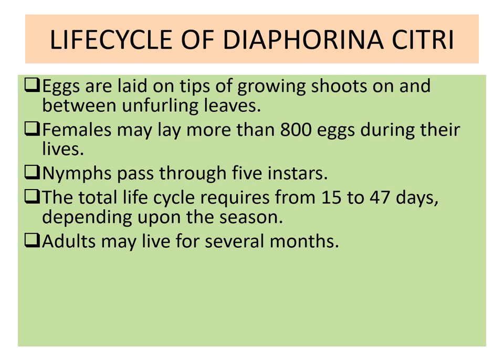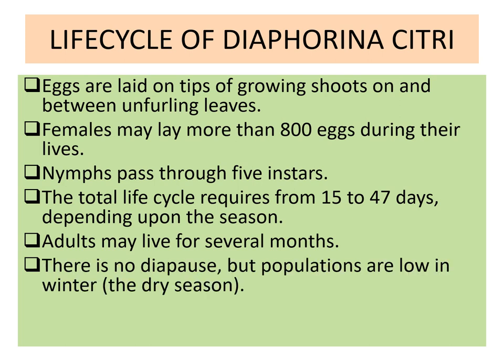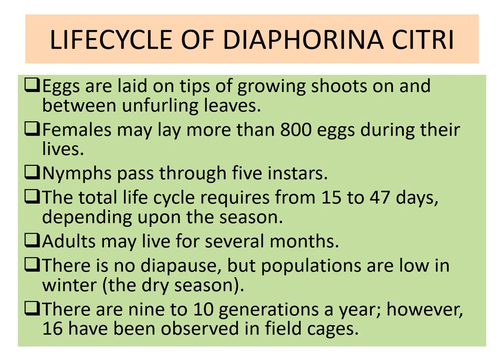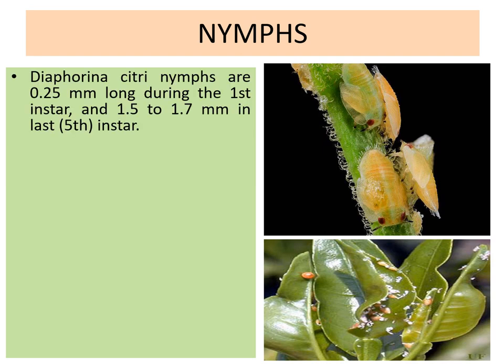Adults may live for several months. There is no diapause, but populations are low in winter, which is the dry season. There are 9 to 10 generations per year; however, 16 have been observed in field cases.